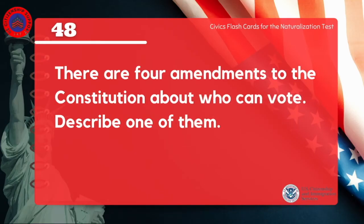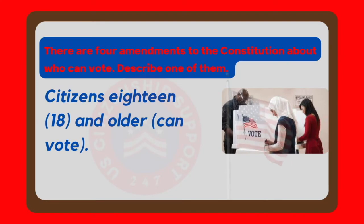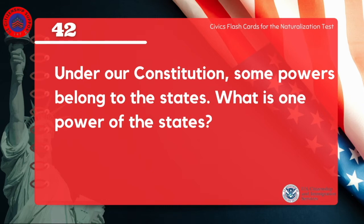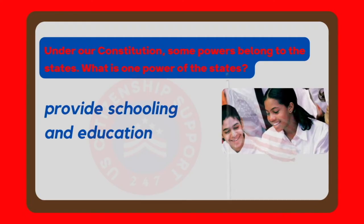There are four amendments to the Constitution about who can vote. Describe one of them. Citizens 18 and older can vote. Under our Constitution, some powers belong to the states. What is one power of the states? Provide schooling and education.